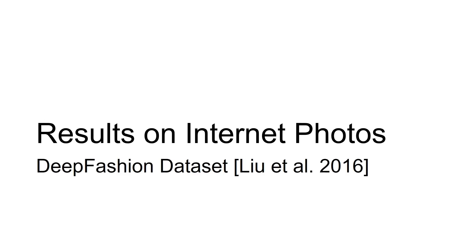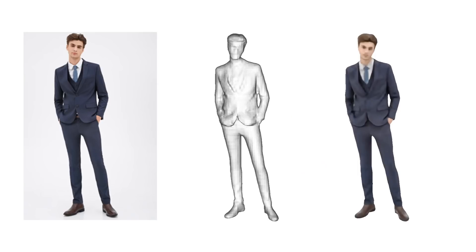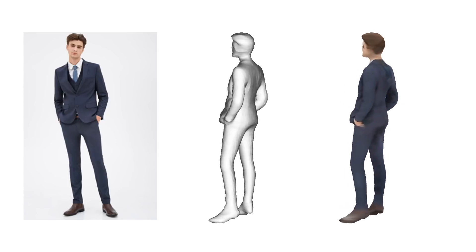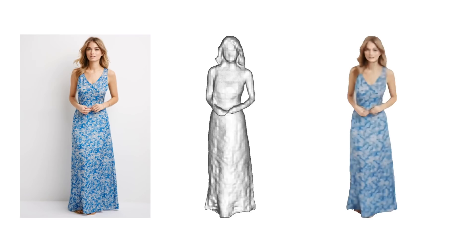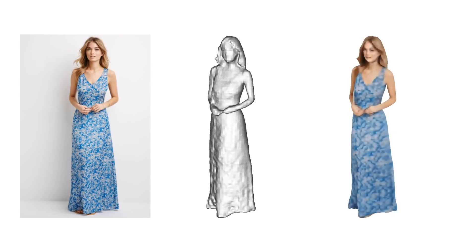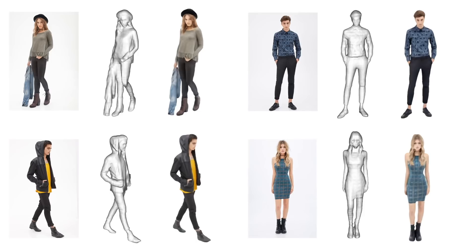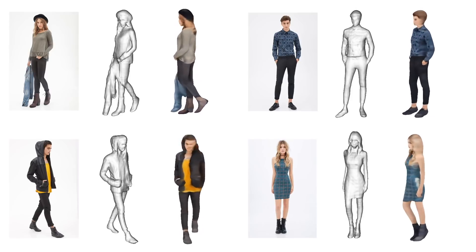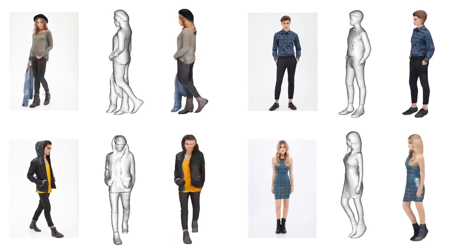Here we show our reconstruction results on internet photos obtained from the DeepFashion dataset. Although our approach is trained on a synthetic dataset, it generalizes well to real images of humans in a wide variety of clothing including dresses, which template-based approaches have a difficult time reconstructing. Our approach can faithfully reconstruct complex geometry such as hats, hoodies, hairstyles, and even the unworn jacket this top-left subject is holding.